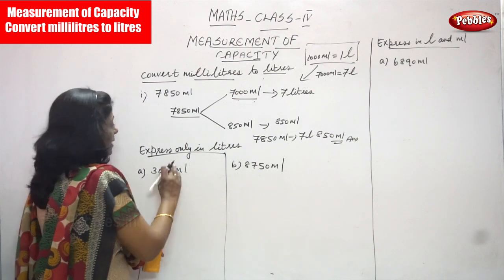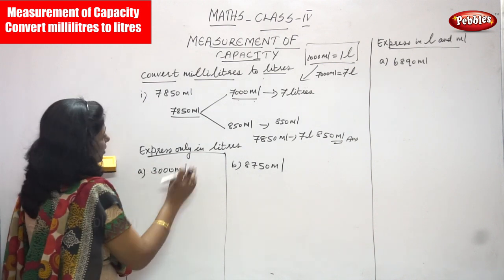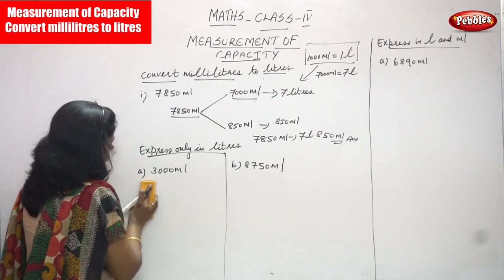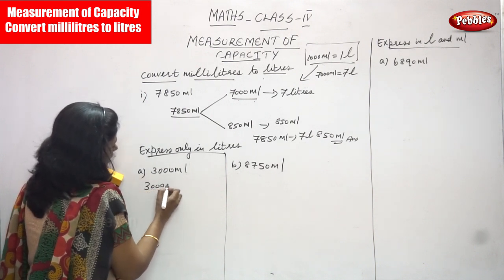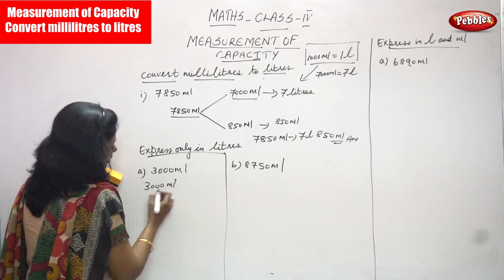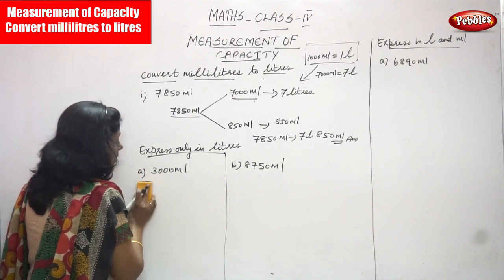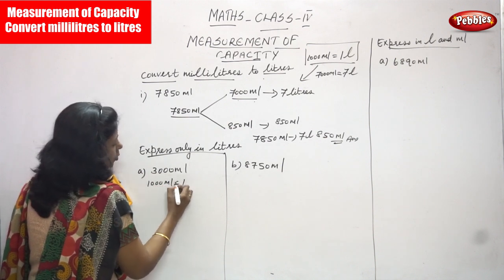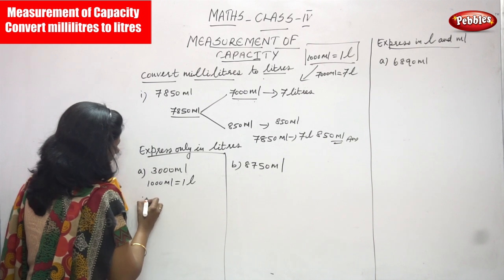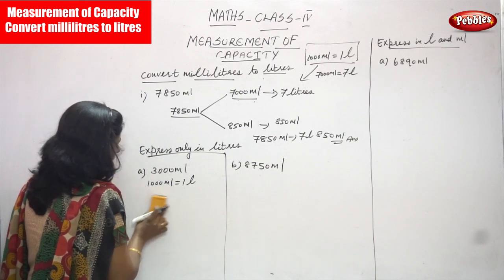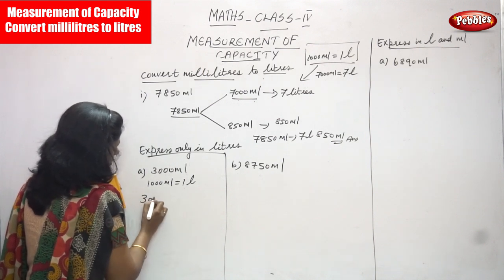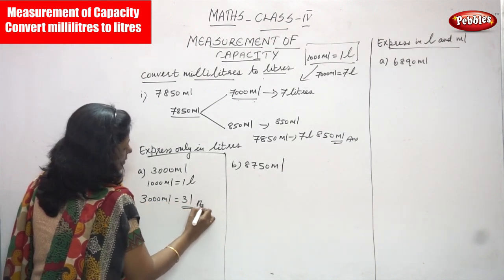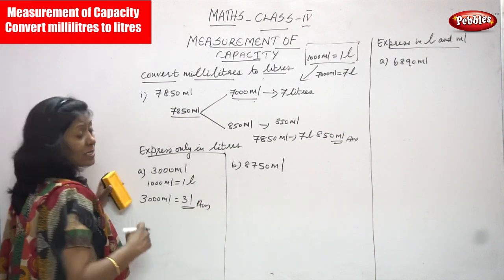Next: express only in liters. The question is 3000 ml. You know that 1000 ml is equal to one liter, therefore 3000 ml is equal to how many liters? Three liters.